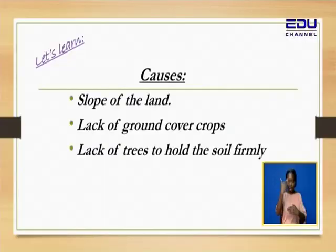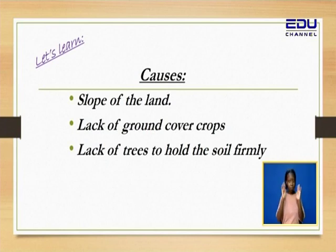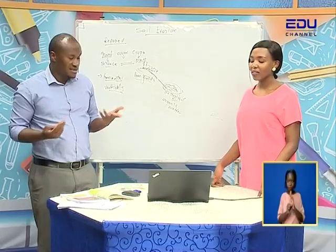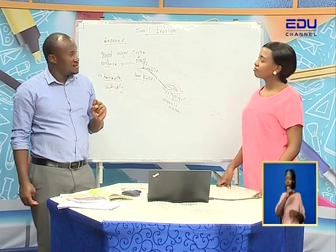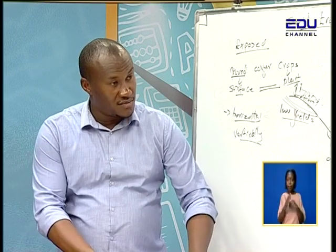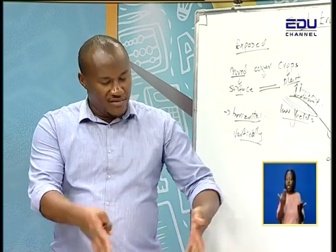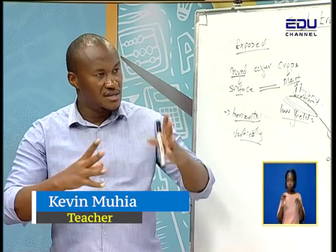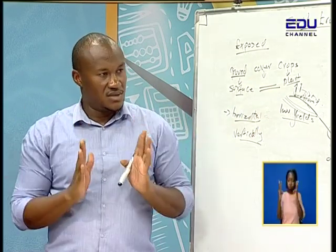Another cause: lack of trees to hold the soil firmly. Trees are very important. Number one, they hold the soil firmly. Two, they prevent soil erosion. Three, they give us oxygen — we breathe out carbon dioxide, a good relationship. Another importance of trees: they are windbreakers. Wind is an agent of soil erosion — trees prevent it. They don't stop the wind completely, but they reduce its speed.